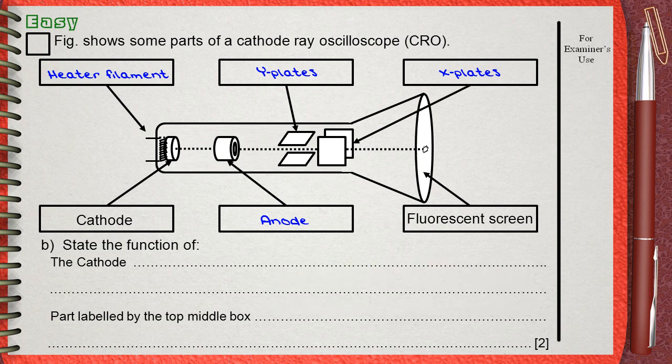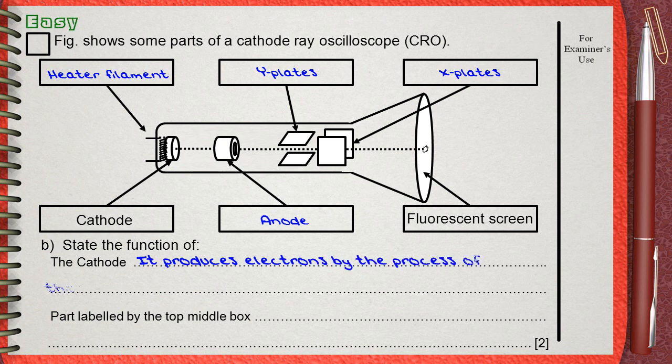When the cathode is heated, it produces a beam of electrons that moves through the anode, Y plates, and X plates toward the fluorescent screen. This is the function of the cathode: it produces electrons by the process of thermionic emission.